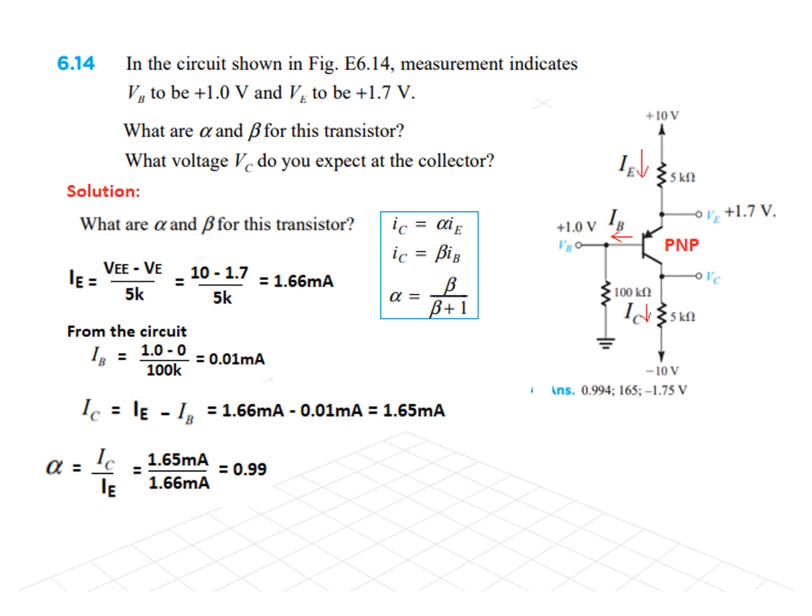Now, we can find alpha. From here, alpha is IC over IE. Putting in the values, alpha is 0.99. And beta is IC over IB. Putting in the values, it is 165.